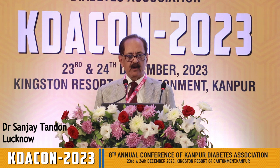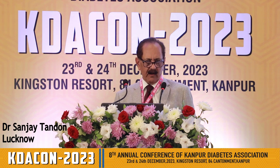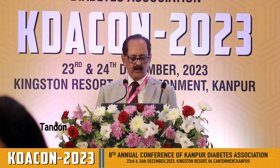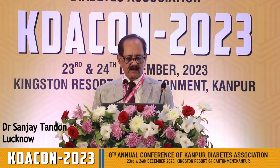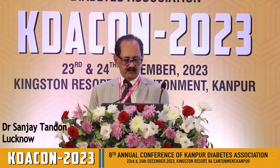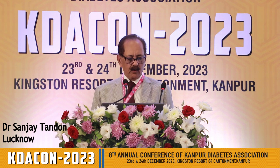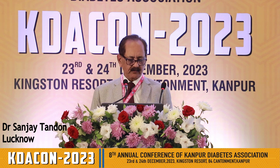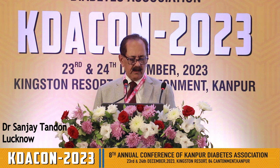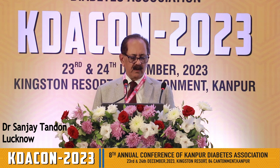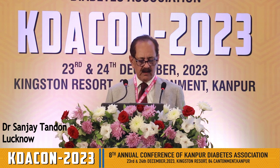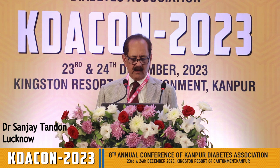What to avoid on keto diet? Sugary foods and grains with starches. All fruits except small portions of berries and strawberries. Beans and legumes. Root vegetables, especially potatoes, sweet potatoes, and carrots, as they are high in carbohydrates. Low fat diet products should also be avoided, as should some condiments or sauces, unhealthy fats, processed vegetable oils, and mayonnaise. Alcohol — beer contains a lot of carbohydrates — and sugar-free diet foods should also be avoided on keto.